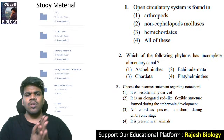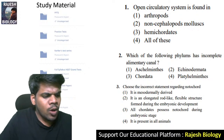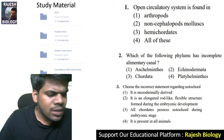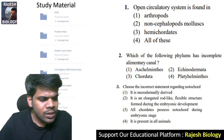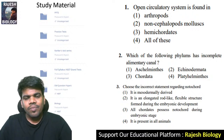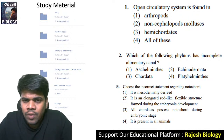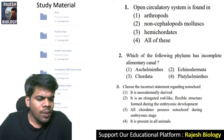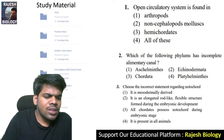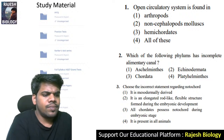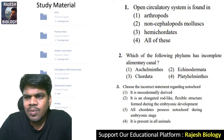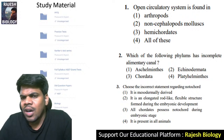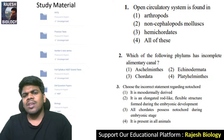Now, come to the first question. Happy New Year to all of you! First question: Open circulatory system is found in — options are earthworms, non-cephalopod mollusks, hemichordates, and all of these. Find out the answer for the first, second, and third questions also.